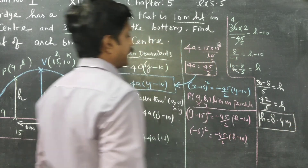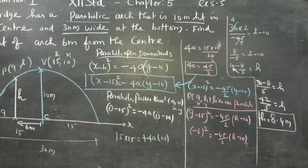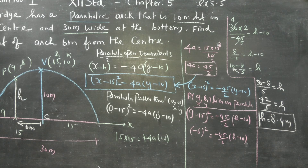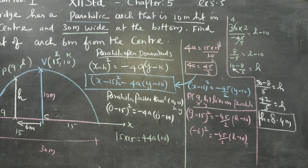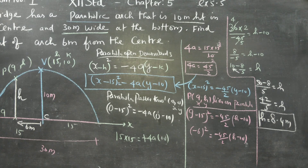Therefore our required height will be 8.4 meters — approximately 8.24 meters. To revise the sum: the bridge has a parabolic shape. We set up measurements, drew the y-axis, placed the vertex at (15, 10), and used x and y coordinates. We derived the equation of the parabola, substituted the origin to find 4A, then substituted x=9 (which is 15 minus 6) to find the height h. Thank you.